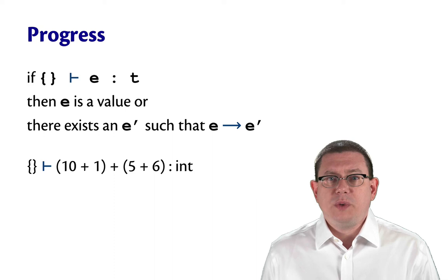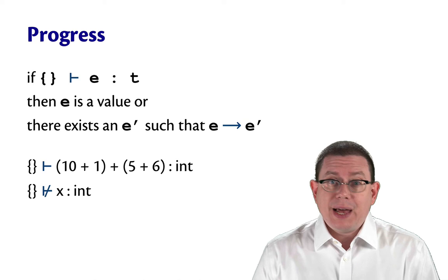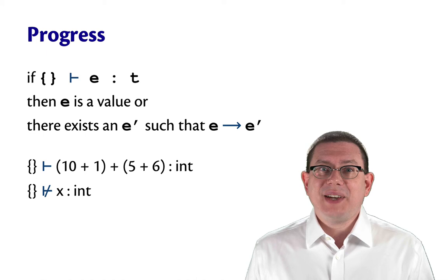Progress doesn't say anything about badly typed expressions. So X cannot be given type int in the empty environment. But that's okay. Progress doesn't say that X is a value or that it must take a step because it has no good type. In fact, this is an expression that would produce a runtime error. And so it's a good thing that we can't give it a type.